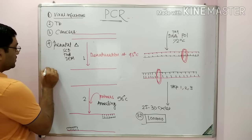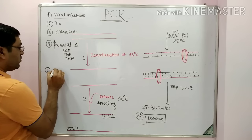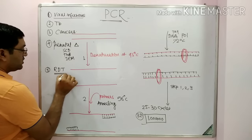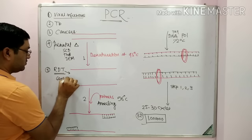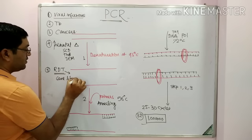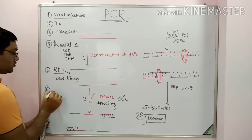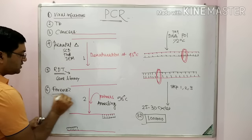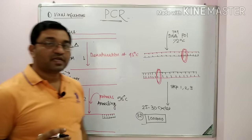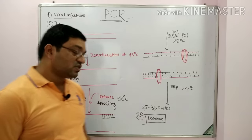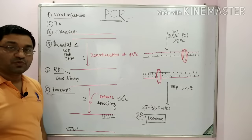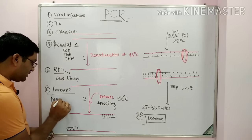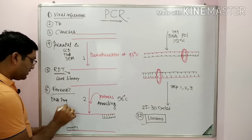Fifth, PCR is useful in molecular biology or recombinant DNA technology for the construction of gene libraries. Sixth, it is useful in forensic medicine — used for identification of criminals, thieves, and rapists, and is useful in paternity disputes. This application is known as DNA fingerprinting.